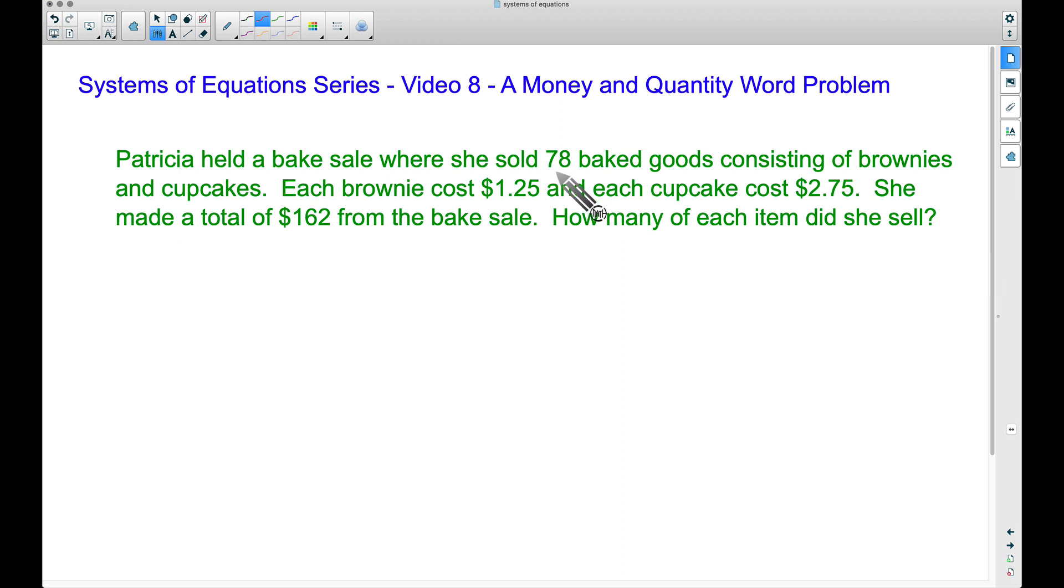Now we know there's a total of 78 baked goods consisting of brownies and cupcakes, but we don't know how many of each. So I'm going to write b + c = 78. This represents the number of brownies plus the number of cupcakes, equal to 78 baked goods. This is our first equation in our system of equations.